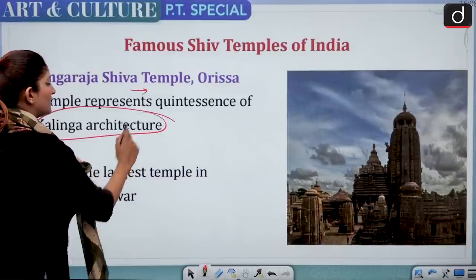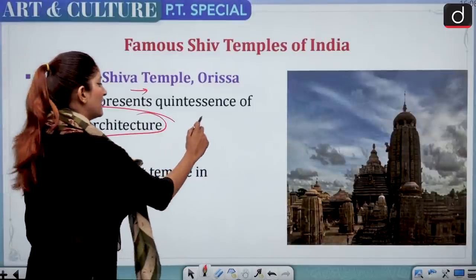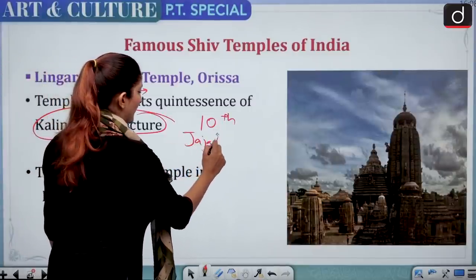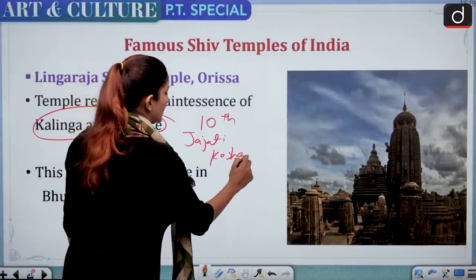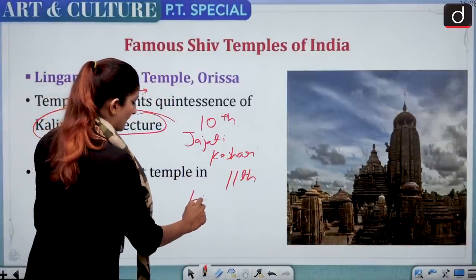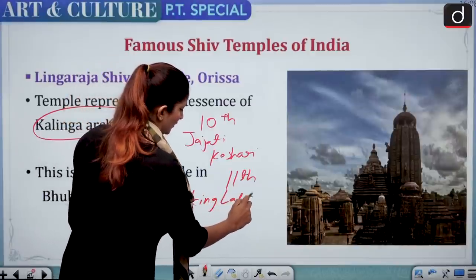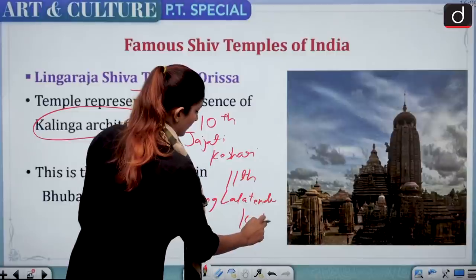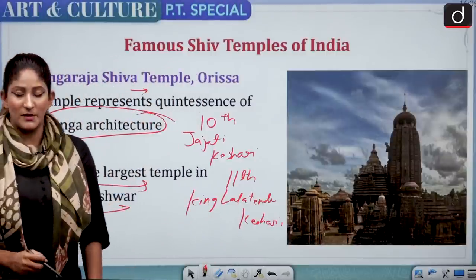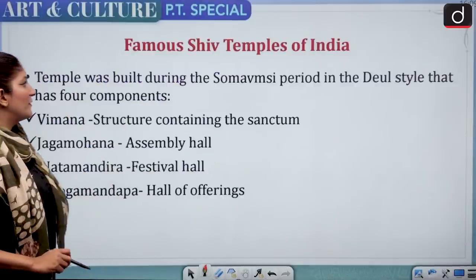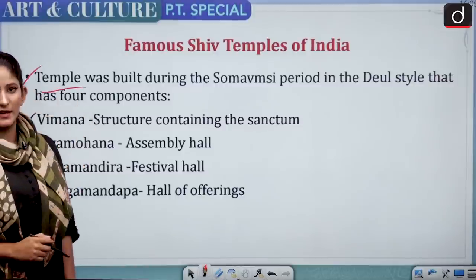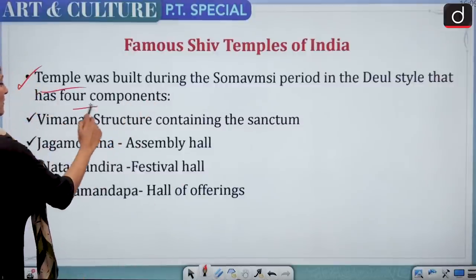Lingaraj Shiva Temple of Odisha was built in the Kalinga style and Kalinga architecture. It was built in the 10th century by King Jajati Keshari and completed in the 11th century by King Lalatendu Keshari. It is the largest temple in Bhubaneswar.